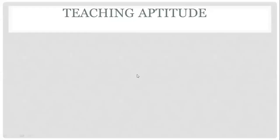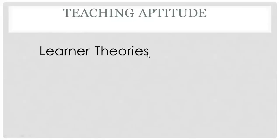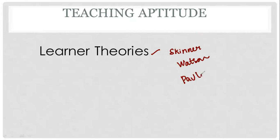Here is the teaching aptitude unit. The first question comes to the learner theory. How is the learner theory? There are many theories like Skinner theory, Watson, and Pavlov. There are many theories like these. If you want to see these theories, you will find a preference.